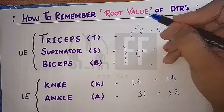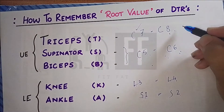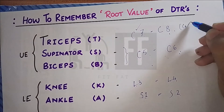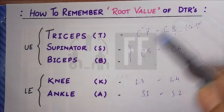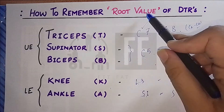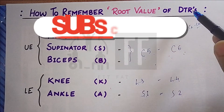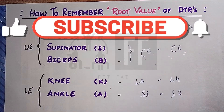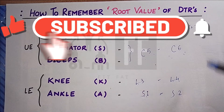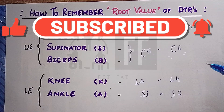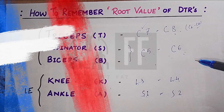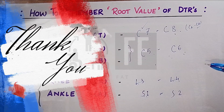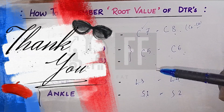For triceps, C7 is dominant, and sometimes C6 and C7 are also given as the root value. From now on you are not going to forget the root values of the DTR after seeing this video. If so, please don't forget to like, share, and subscribe to my channel and press the bell icon. You can also join me on my other social media handles — the link is given in the description box. Thank you so much for watching!